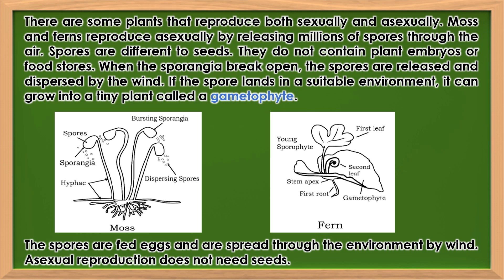There are some plants that reproduce both sexually and asexually. Moss and ferns reproduce asexually by releasing millions of spores through the air. Spores are different from seeds — they do not contain plant embryos or food stores. When the sporangia break open, the spores are released and dispersed by the wind. If a spore lands in a suitable environment, it can grow into a tiny plant called a gametophyte. Asexual reproduction does not need seeds.